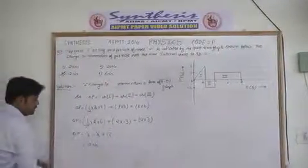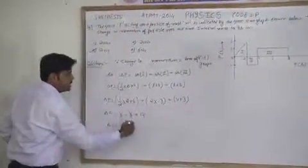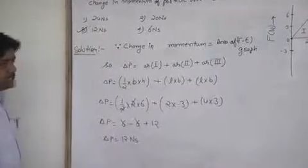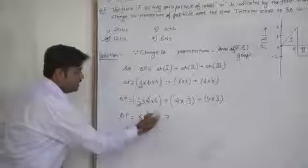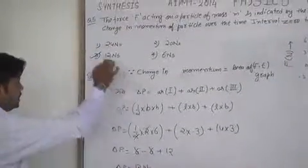First segment area is 6. Second segment is minus 6. Third segment is 12. Calculating: 6 minus 6 plus 12 equals 12 Newton-seconds. That is option number 3.